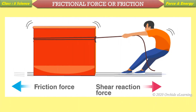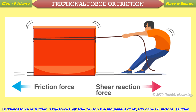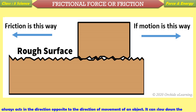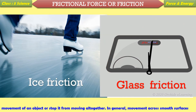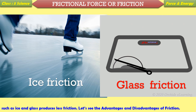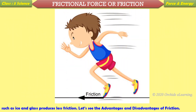Frictional force or friction is the force that tries to stop the movement of objects across a surface. Friction always acts in the direction opposite to the direction of movement of an object. It can slow down the movement of an object or stop it from moving altogether. In general, movement across smooth surfaces such as ice and glass produces less friction. Let's see the advantages and disadvantages of friction.